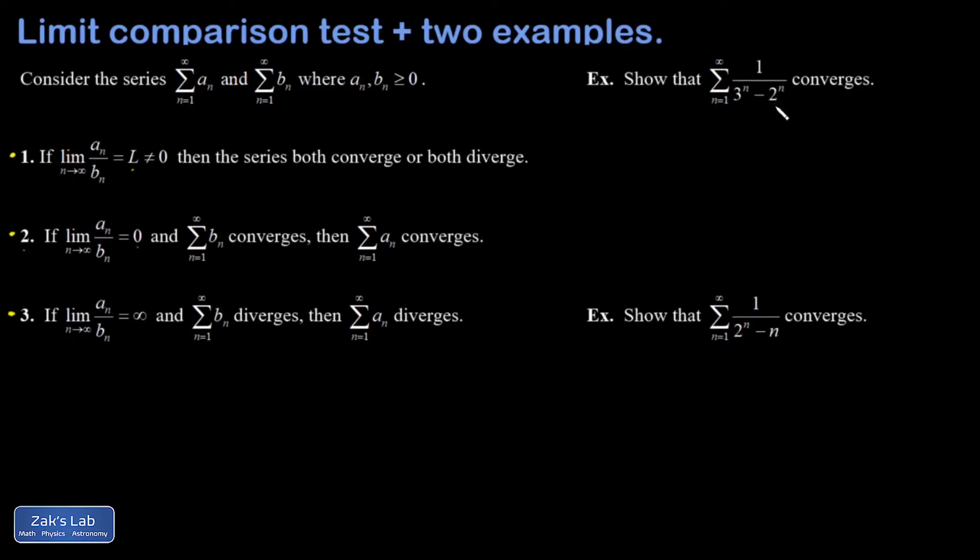Unfortunately, by subtracting the two to the N in the denominator, I'm making each of these terms larger. So there's a danger that this might not actually converge. So I'm thinking to myself, in the large N limit, that three to the N is going to be so much bigger than the two to the N that this series essentially becomes one over three to the N. And that's how you decide what to compare to.